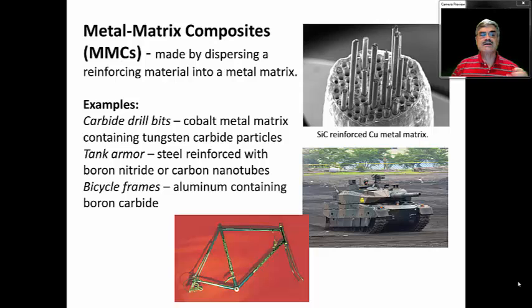Examples are carbide drill bits which involves cobalt, the metal cobalt as the matrix containing some tungsten carbide particles. Tank armor is steel reinforced by carbon nitrate or these carbon nanotubes to make the material much harder than it would otherwise be. And another example are bicycle frames which is aluminum containing these long fibers of boron carbide. So metal matrix composites are a relatively new type of composite material designed to improve the hardness of the material while at the same time being a very light weight material.